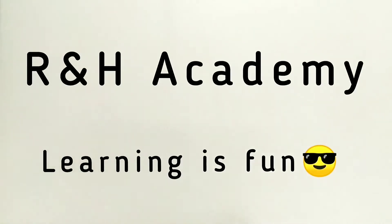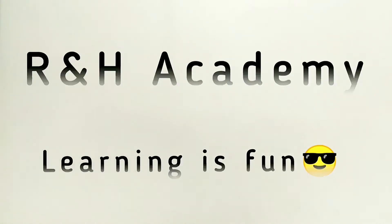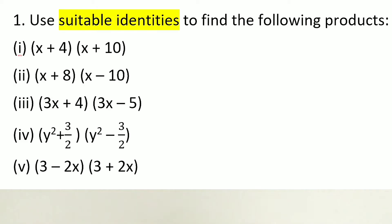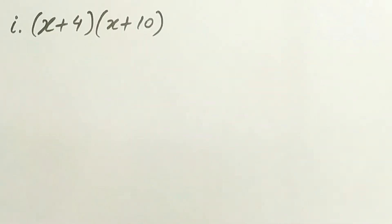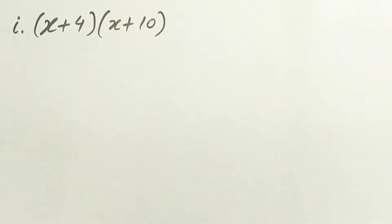Welcome to RFH Academy channel. Question 1 of exercise 2.5 says, use suitable identities to find the following products. The first part is x plus 4 multiply x plus 10.